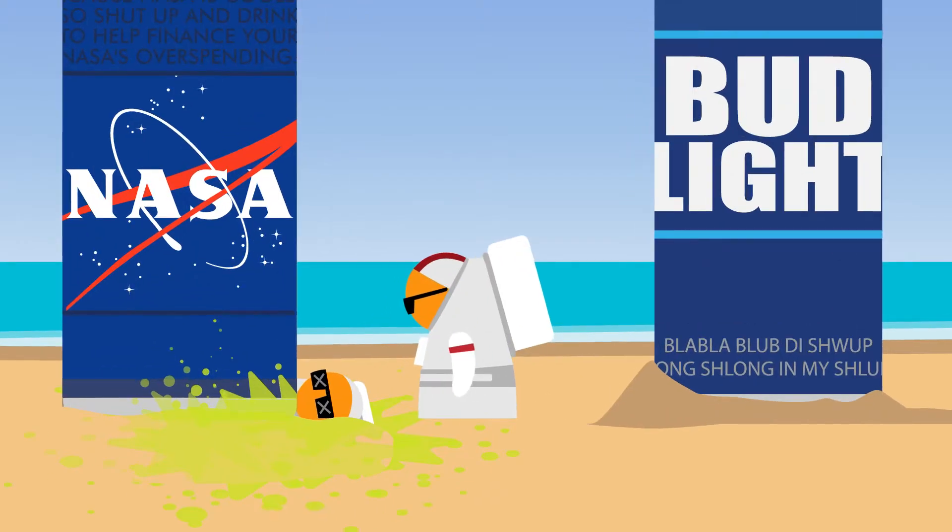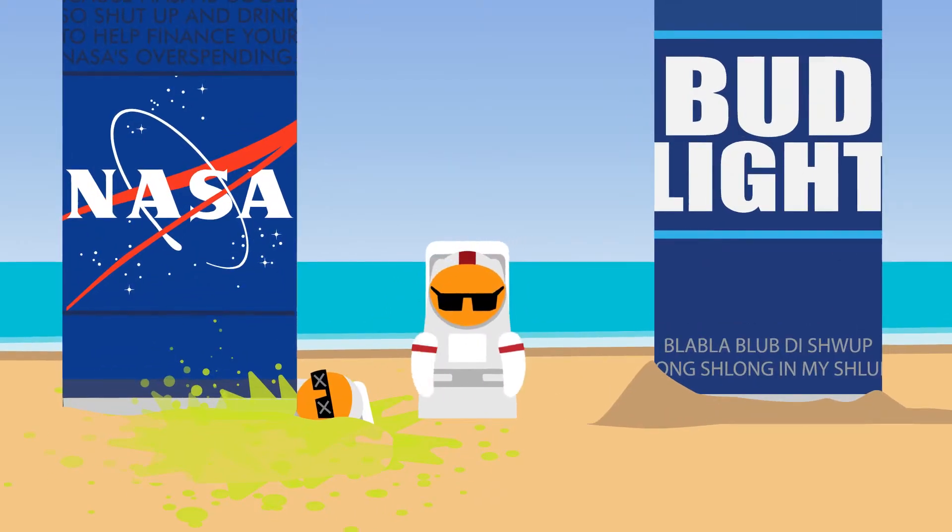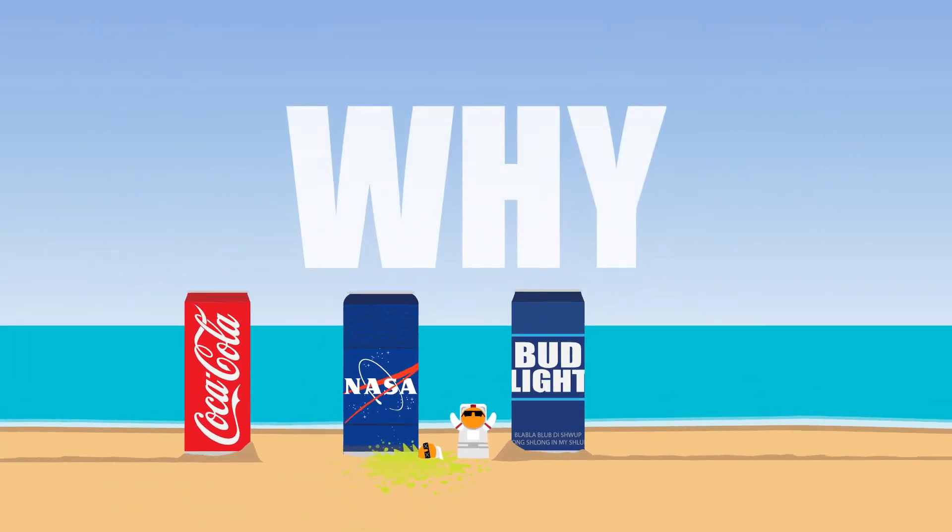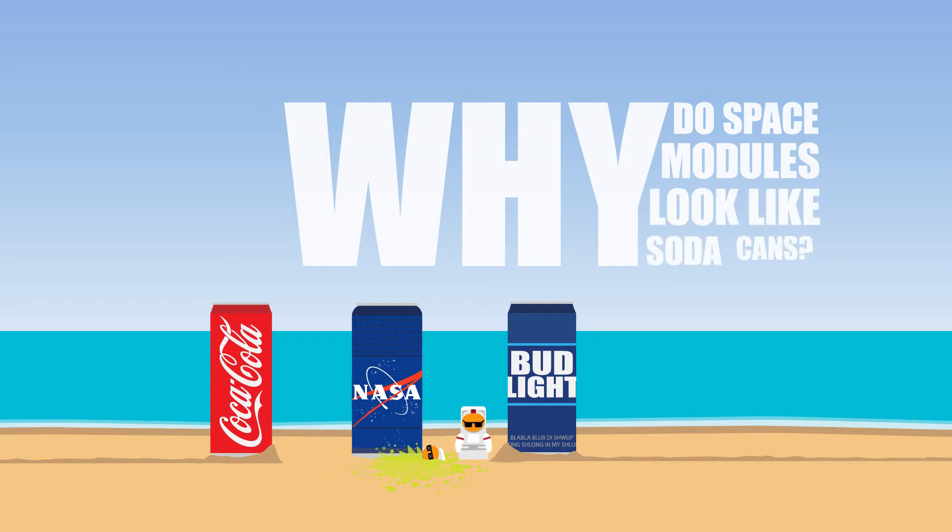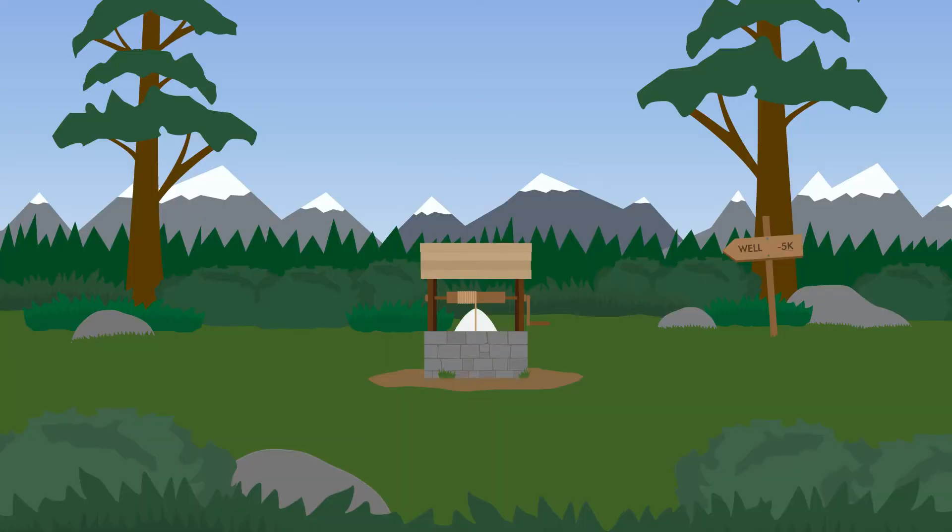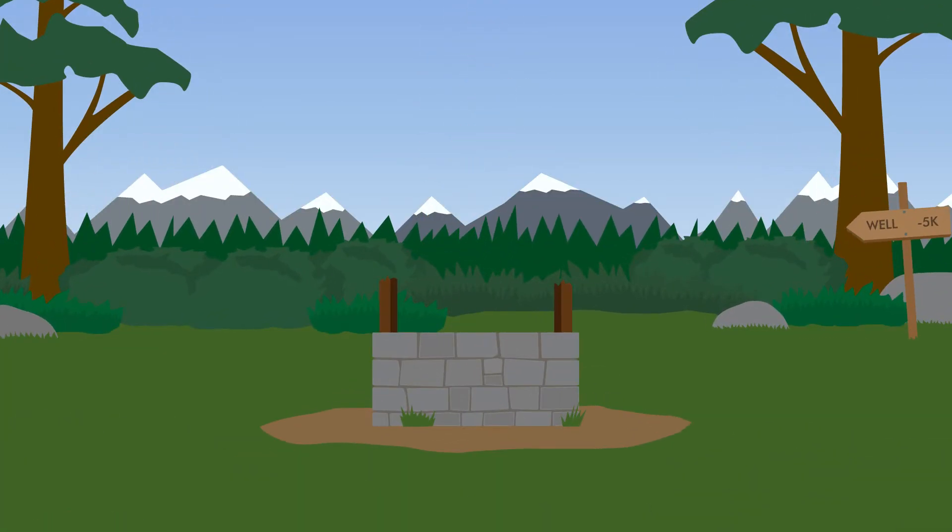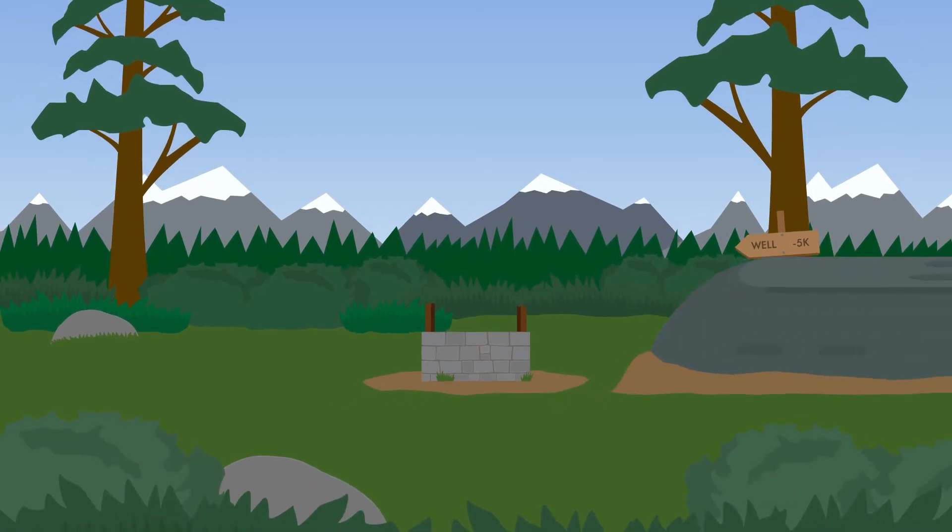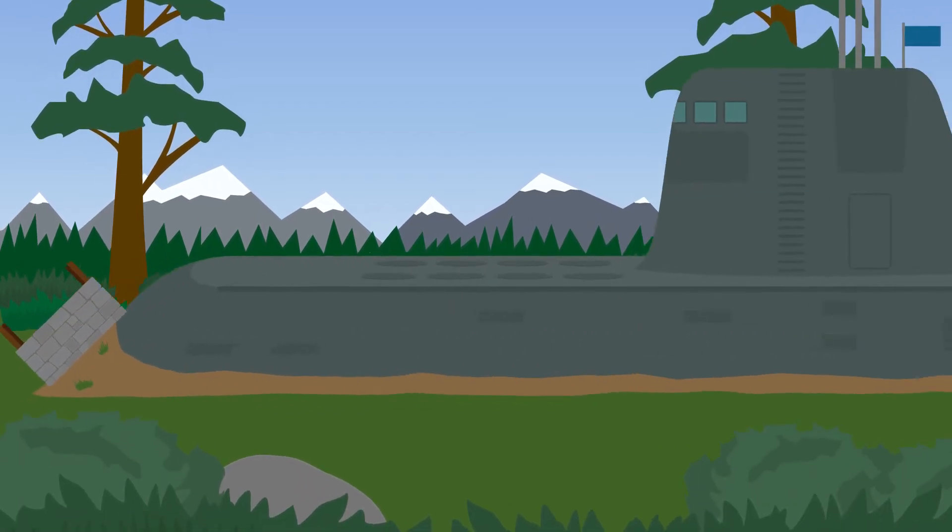And this begs the question, why? Why do space modules look like soda cans? Well, one reason has to do with rockets and the other reason has to do with nuclear submarines capable of nuking the entirety of North America.